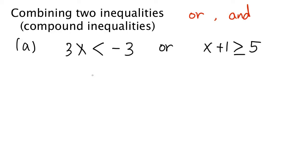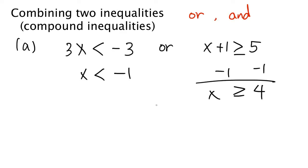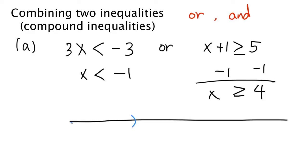Let's solve this problem. We can solve the first inequality by dividing both sides by 3, and we get x less than negative 1. And if we subtract 1 from both sides of the second inequality, we get x greater than or equal to 4. We can draw the solutions on the number line: the solutions of the first inequality are the numbers less than negative 1, and the solutions of the second inequality are the numbers greater than or equal to 4.